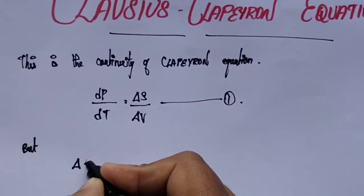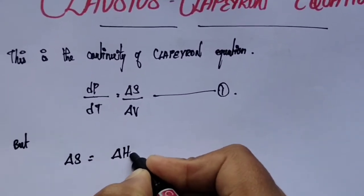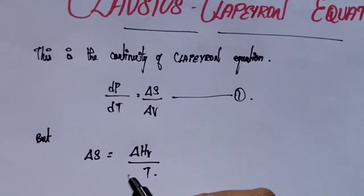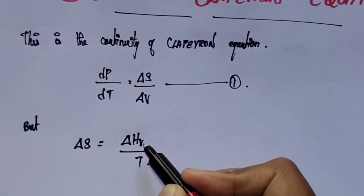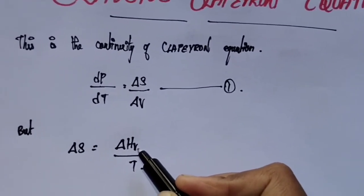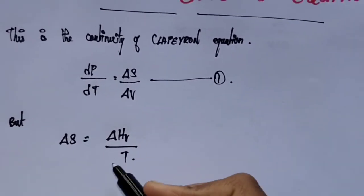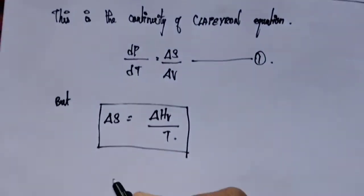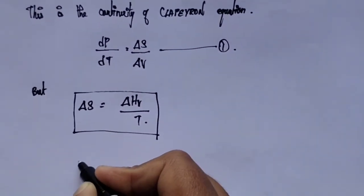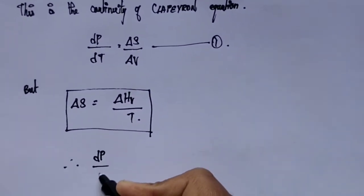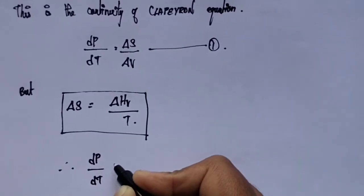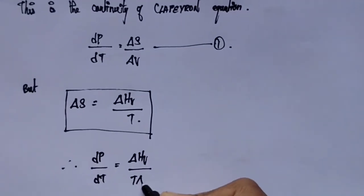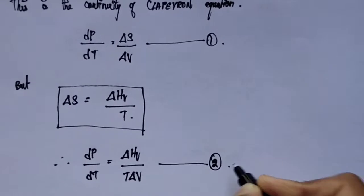We know that entropy, ΔS, is equal to ΔHv divided by T, where Hv is the molar heat of vaporization. Substituting this in equation number 1, we get dP/dT is equal to ΔHv upon T·ΔV. Take this as equation number 2.